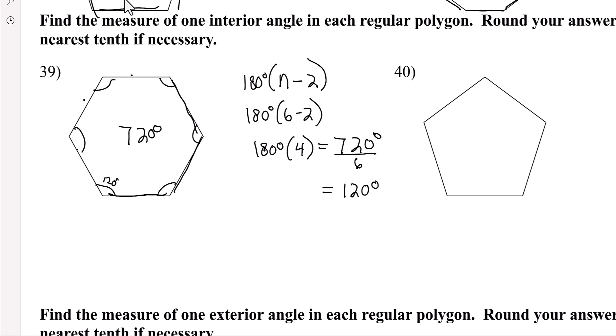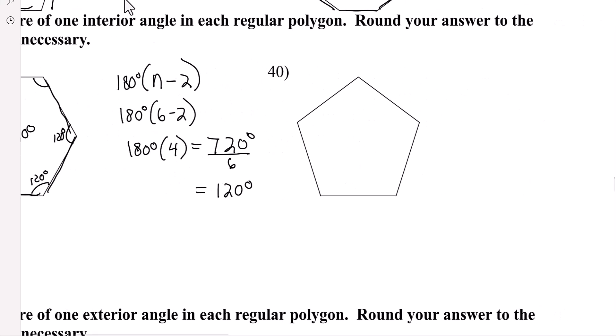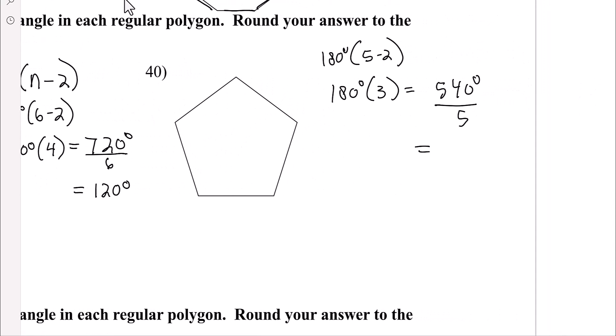So, this angle is 120. 120. You get the idea. So, now, we have a pentagon. So, that's 180 degrees. Five, subtract two. That'll give us our total amount. So, 180 degrees, times three, which is 540 degrees. And, then, we're going to divide that by the number of angles. Divide that by five. And, what do we end up with? 108 degrees. So, each one of these angles are 108 degrees.